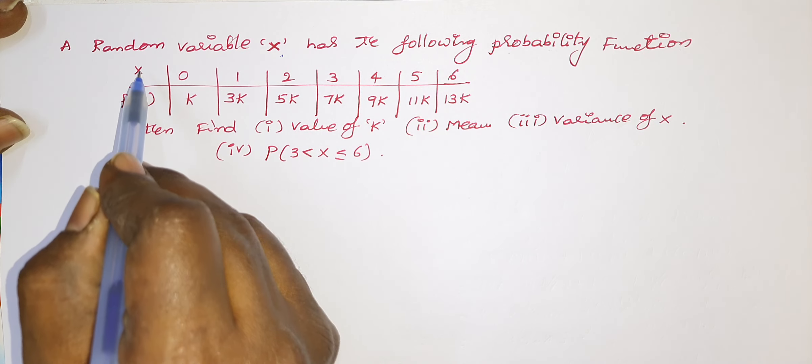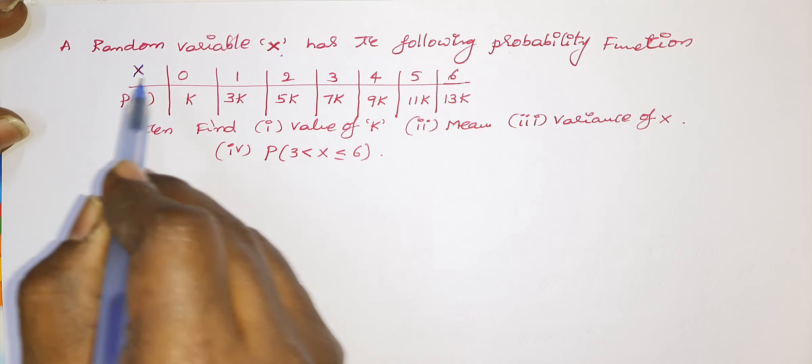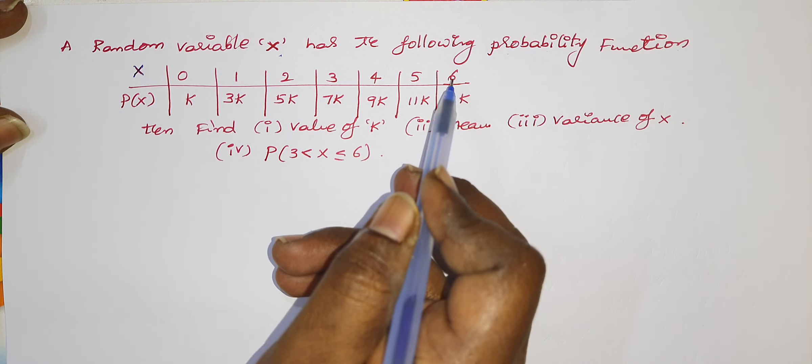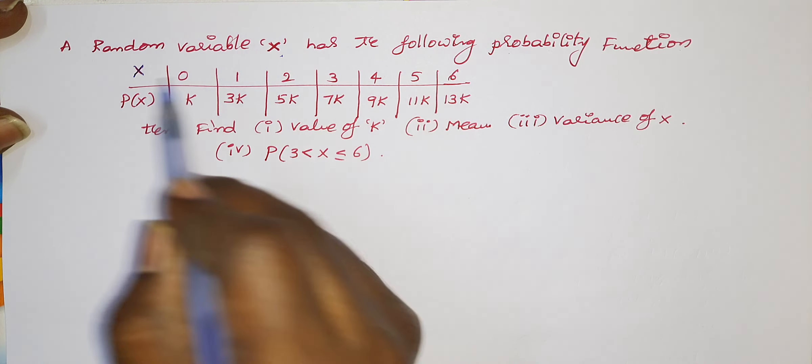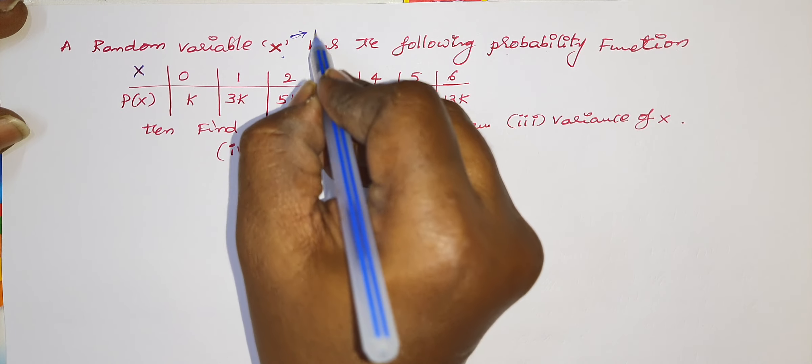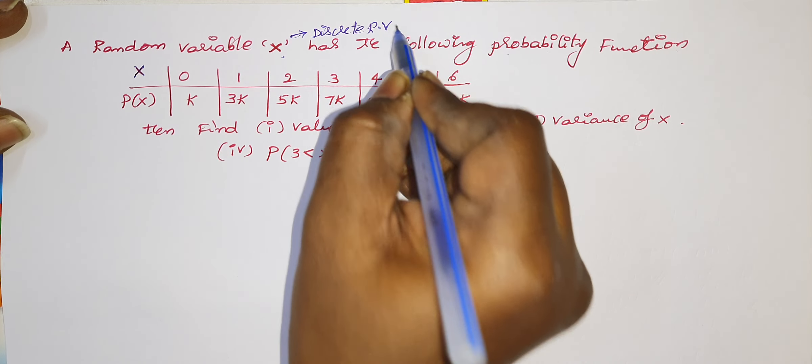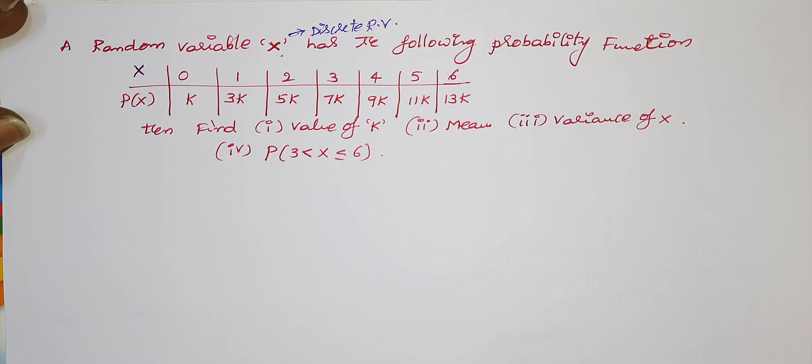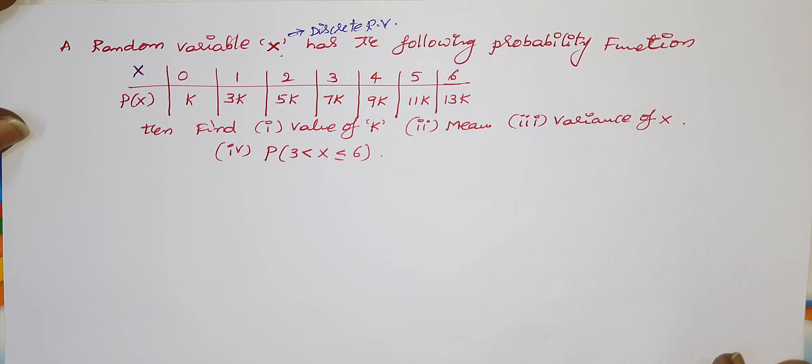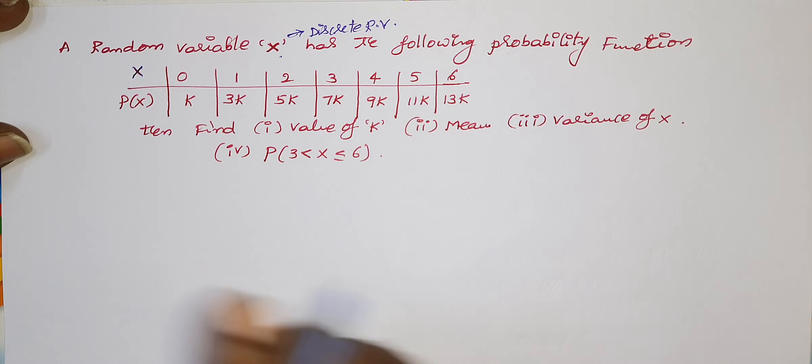See here x, the random variable x takes the values 0, 1, 2, 3, 4, 5, 6. Since these are integers, the given random variable is a discrete random variable. If x takes only integers, then it is called a discrete random variable. Suppose capital X takes values in interval form, then it is called a continuous random variable.